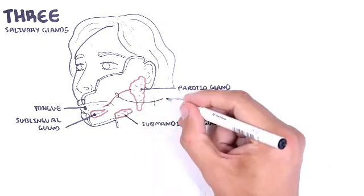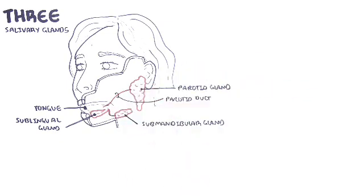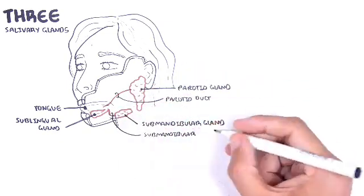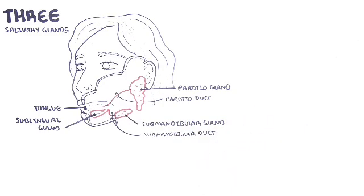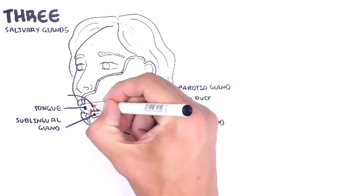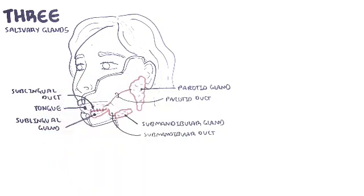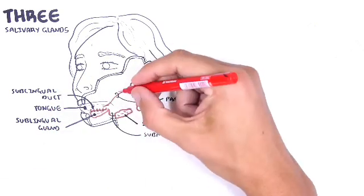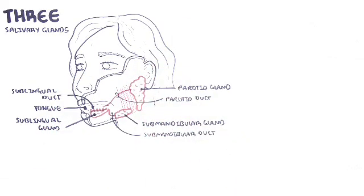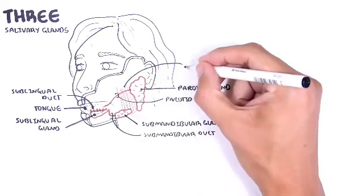Each salivary gland has ducts which drain into the oral cavity, the mouth. The parotid duct, the submandibular duct, and the sublingual ducts drain into the oral cavity. Here is the masseter muscle again, which sits anterior to the parotid gland.